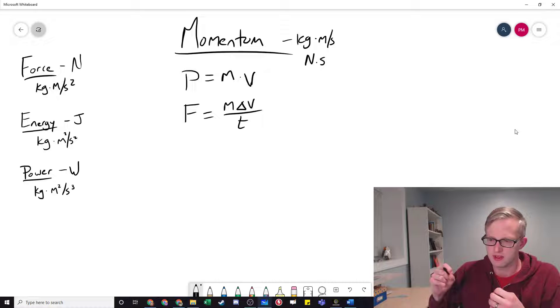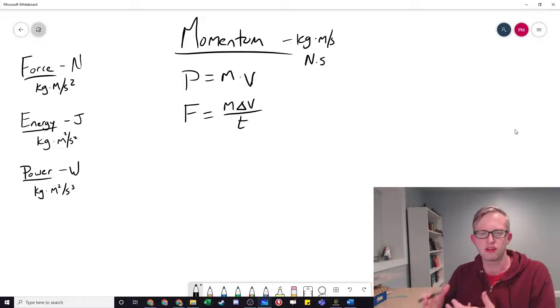Think about the tendency of that object to impart action upon things it might collide with or resist change to its own motion. It has units of kilogram meters per second, which we sometimes represent as Newton seconds.